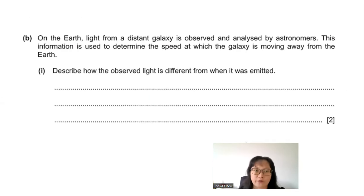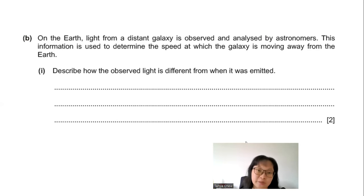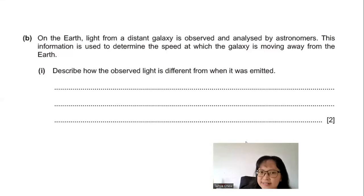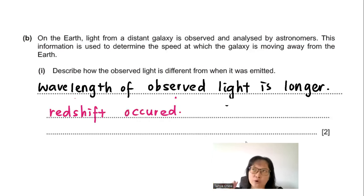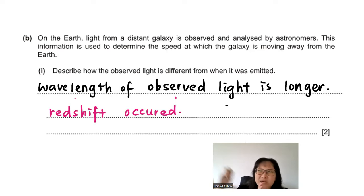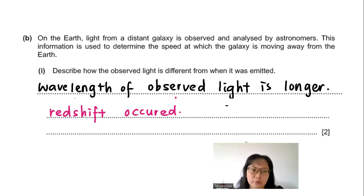Part B: Light from a distant galaxy is observed and analysed by astronomers to determine the speed at which it is moving away. Part B1: Describe how the observed light differs from when it was emitted. The observed wavelength is longer — it is shifted towards the red region of the spectrum. This is called red shift.